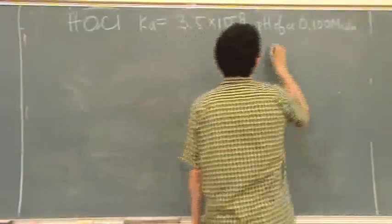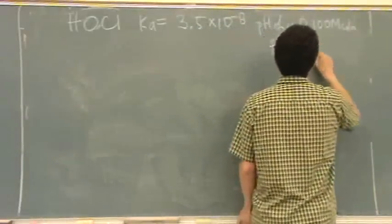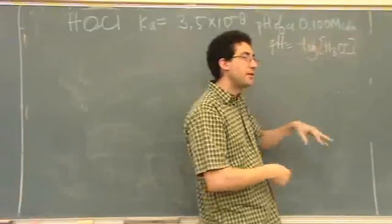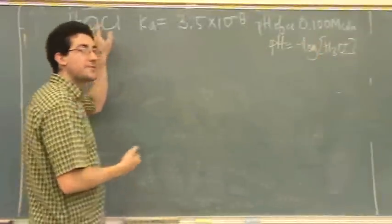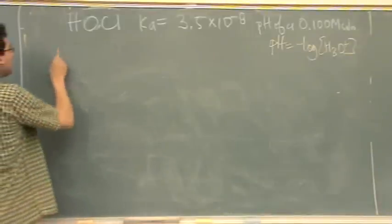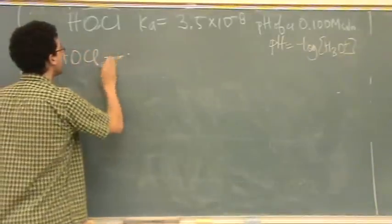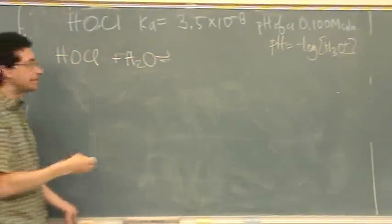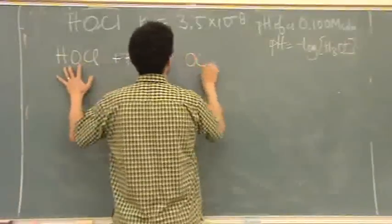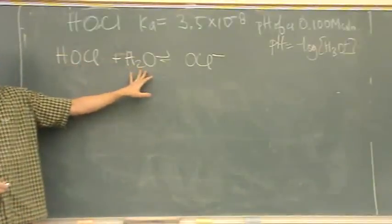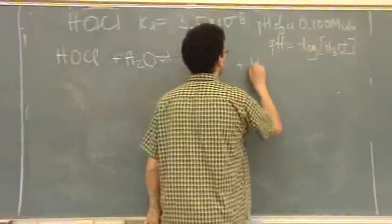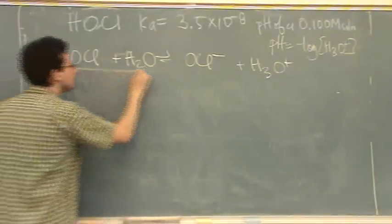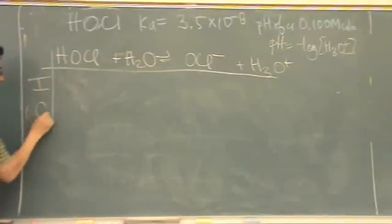And pH essentially means I want equilibrium concentrations. So again, another hint that you want an ice table. Because to get the pH, I have to know the negative log of H3O plus. And that's going to be an equilibrium concentration. So, for this, it's a weak acid. You have to use the ice table. You want to write out the reaction.